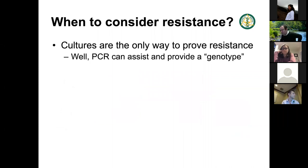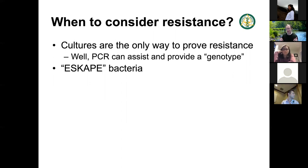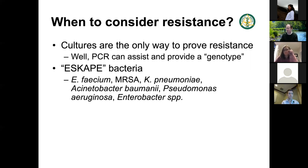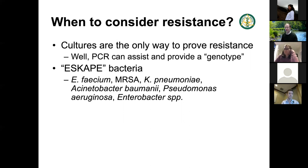When to consider resistance: cultures are the only way to prove it. We're talking genotypes and phenotypes — the phenotype matters, and that's what you see with S, I, and R on culture results. PCR looking at genotype can assist and sometimes comes back faster. ESCAPE bacteria is a useful nomenclature: Enterococcus faecium, Staphylococcus aureus (MRSA), Klebsiella pneumoniae, Acinetobacter, Pseudomonas, and Enterobacter. These pathogens aren't inclusive of everything, but ESCAPE gives us an idea of when to consider resistance.